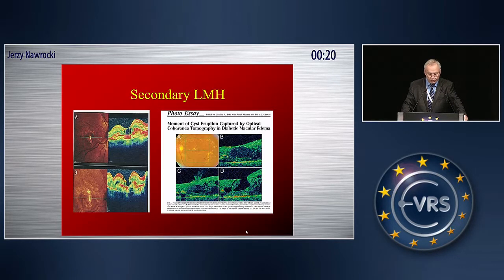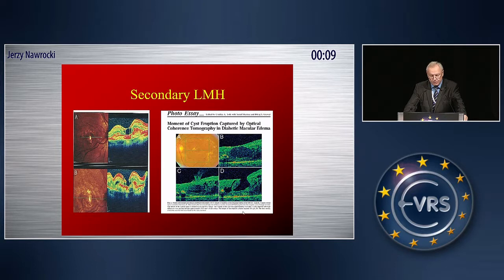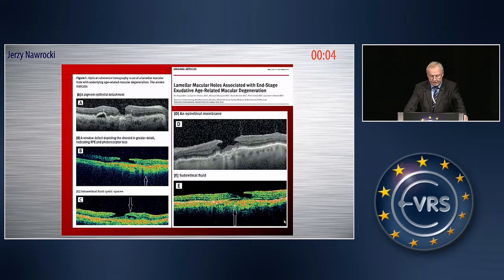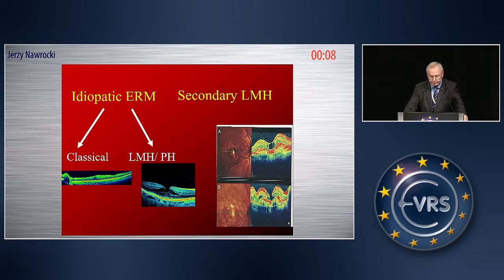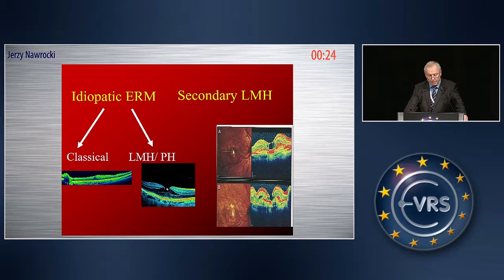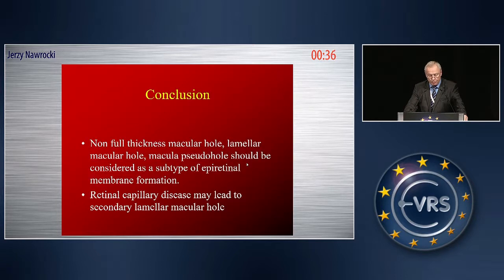We also have some secondary cases. Was Gas wrong with his classification? Probably not, because we also have cases where a cyst erupted and caused a lamellar macular hole secondary to other diseases such as diabetic retinopathy or age-related macular degeneration. Our suggestion is that idiopathic epiretinal membrane may have classical appearance or lamellar macular hole or pseudo hole presentation, but we also have secondary lamellar holes caused by vascular diseases, as Gas previously described before the OCT era.